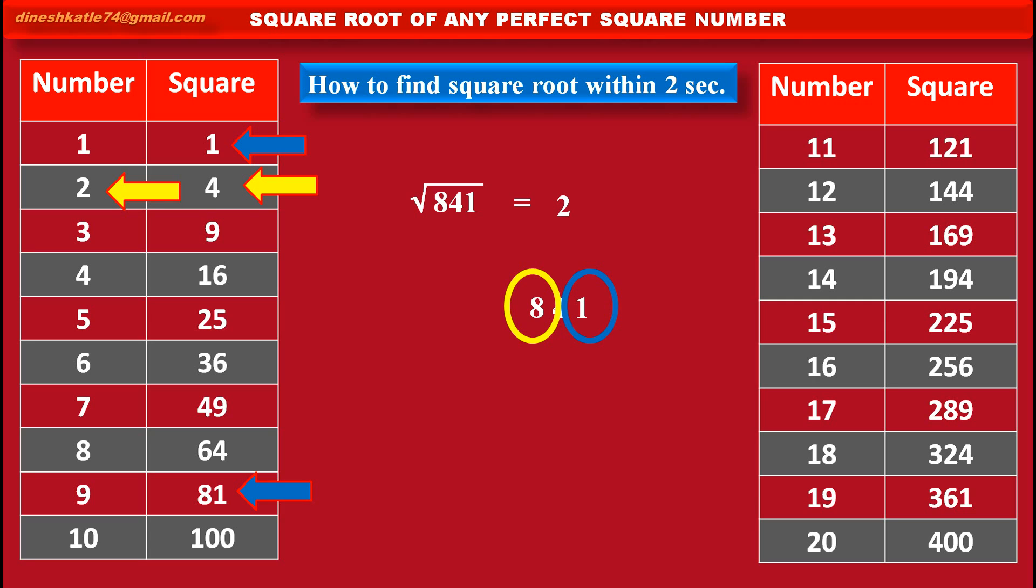Now, for the second digit of the answer, we have two possibilities. First is square root of 1, that is 1, and second one is square root of 81, that is 9. Now, out of these two options, we have to select 1.